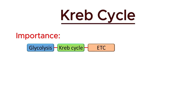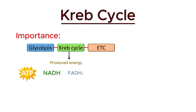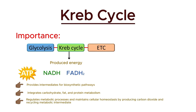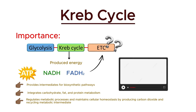The Krebs cycle is crucial for cellular energy production, generating ATP, NADH, and FADH2. It provides intermediates for biosynthetic pathways and integrates carbohydrate, fat, and protein metabolism. Additionally, it regulates metabolic processes and maintains cellular homeostasis by producing carbon dioxide and recycling metabolic intermediates. Electron carriers NADH and FADH2 enter the electron transport chain for energy production. How energy is produced through these carriers will be discussed in the next video.